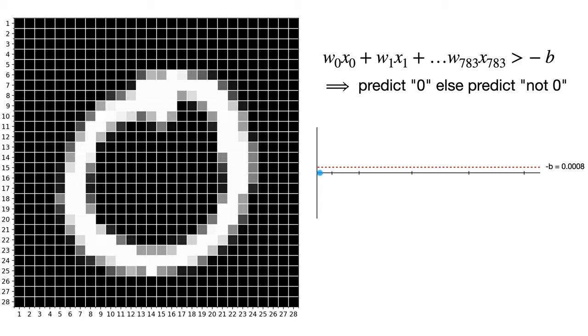We start at zero, and then we move up or down the amount of each of these products. If we end up above the threshold, we predict zero, and if we end up below the threshold, we predict not zero.